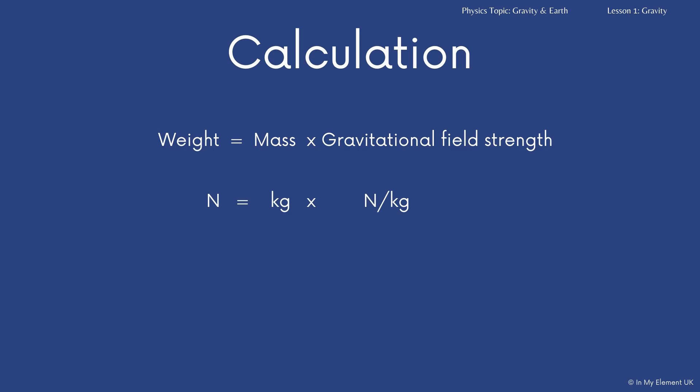Quite often you'll be given the gravitational field strength in an equation. So the units for that are commonly newtons, kilograms, and newtons per kilogram. So you might need to do some conversions, because you might have been given your mass in grams. So weight equals mass times gravitational field strength, which means W equals M times G.